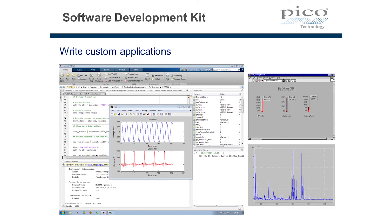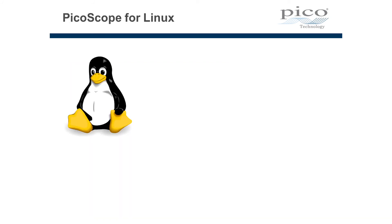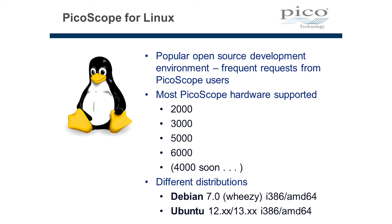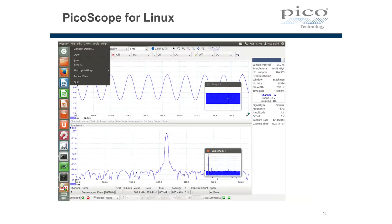Picoscope is also available for Linux and Mac applications. All of the current versions of Picoscope hardware are supported across various versions of Linux and Mac OSX. Finally, we see here an example of a split screen Picoscope application running on Linux with the time domain at the top and the frequency domain representation of the signal showing at the bottom.